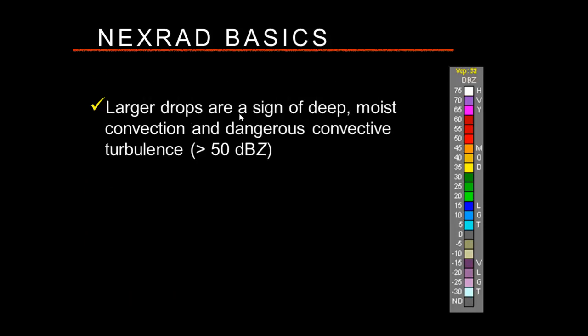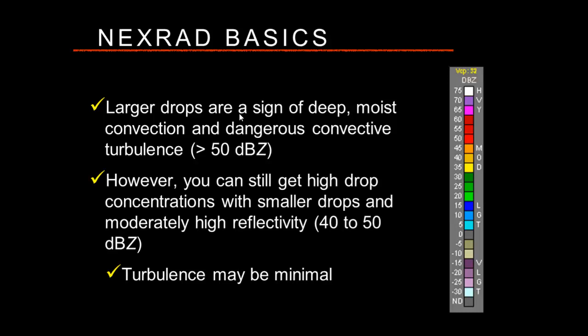Larger drops are a sign of deep convection and probably dangerous turbulence. Once you start getting above 50 dBZ, drop sizes are large enough to potentially produce dangerous convective turbulence. However, you can get significant reflectivity — more on the order of 40 to 50 dBZ — with lots of smaller drops where turbulence might actually be minimal. That's why it's important to understand convective potential before departure by checking convective outlooks.